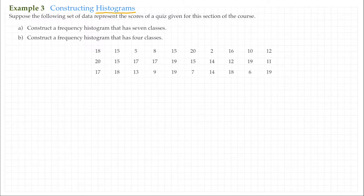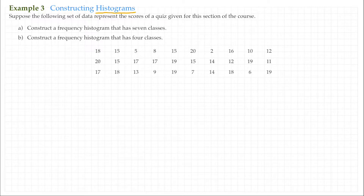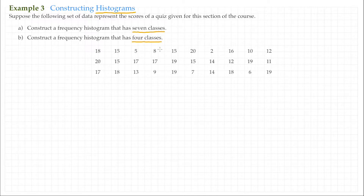This problem states: suppose the following set of data represent the scores of a quiz given for this section of the course. We have two scenarios: A, construct a frequency histogram that has seven classes, and B, construct a frequency histogram that has four classes. A class, or classes, are groups of data divided up into equal width categories, and the width of the categories determines the width of the bars that we're going to be drawing.